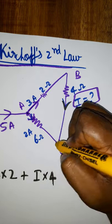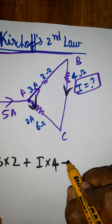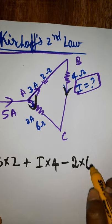When we are coming CA, we are going this side, the current is coming opposite side, minus 2 ampere with 6 ohms is equal to 0.